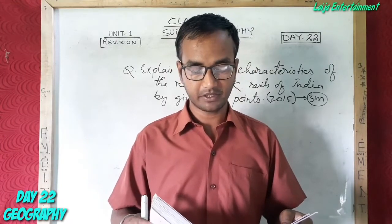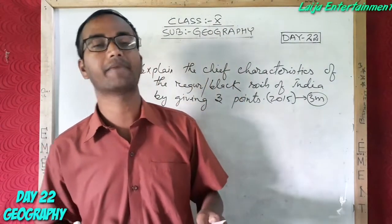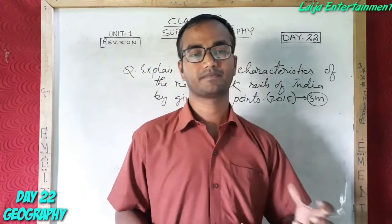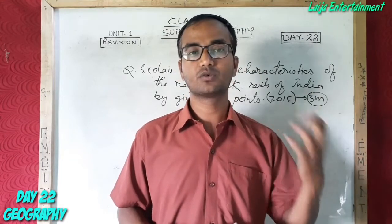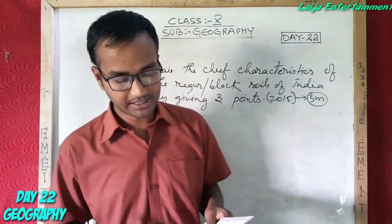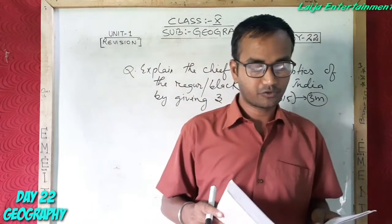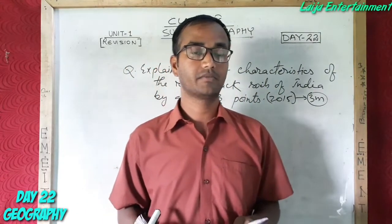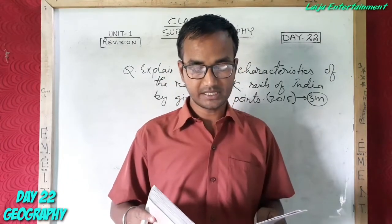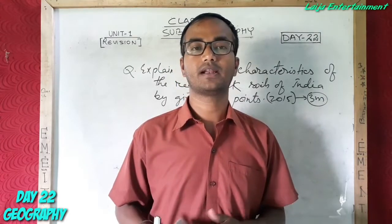First point: they are generally deep and impermeable and capable of sustaining moisture for a sufficiently long time. Second point: they are rich in calcium carbonate, magnesium, potassium, and lime, but poor in phosphorus. Third point: since they are best suited for the cultivation of cotton, these soils are known as black cotton soils.